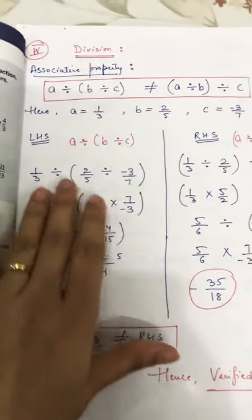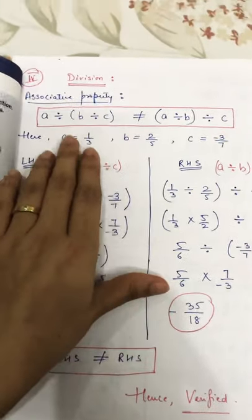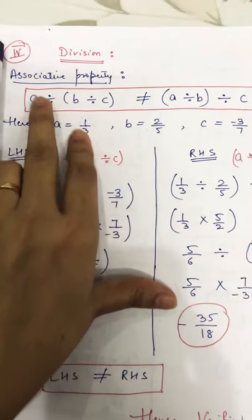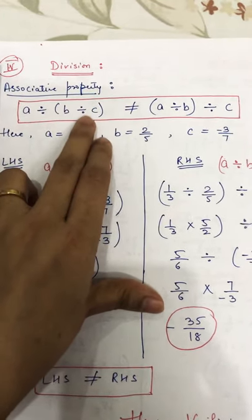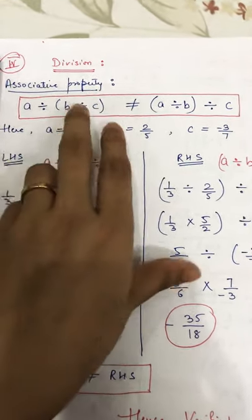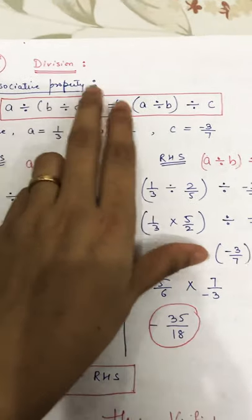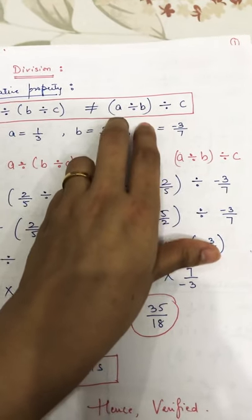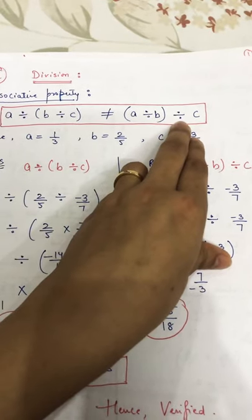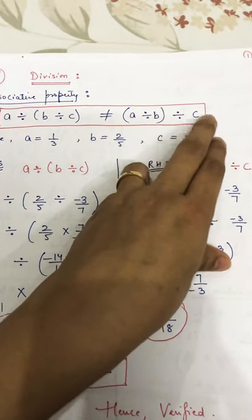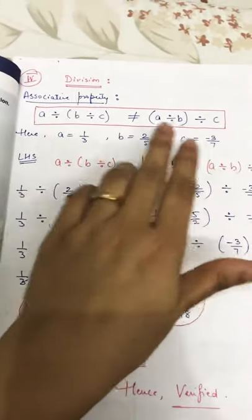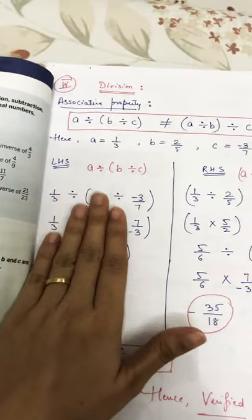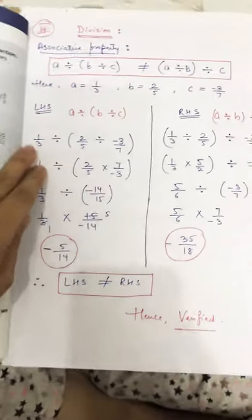Now the last operation is division. The associative property for division states that a divided by (b divided by c) will NOT be equal to (a divided by b) divided by c. Now let's place the values of a, b, c and take left hand side and right hand side.